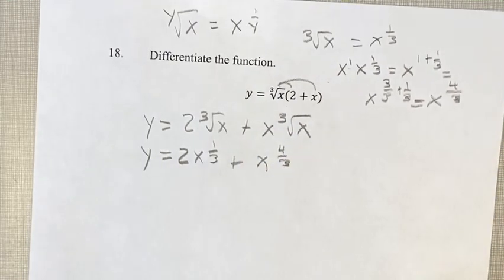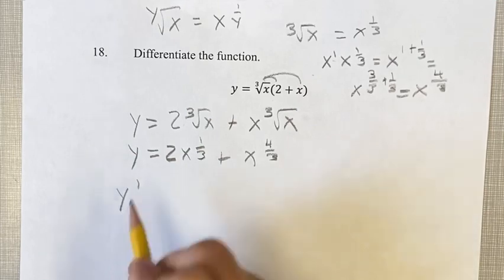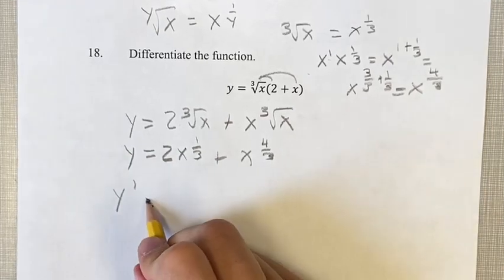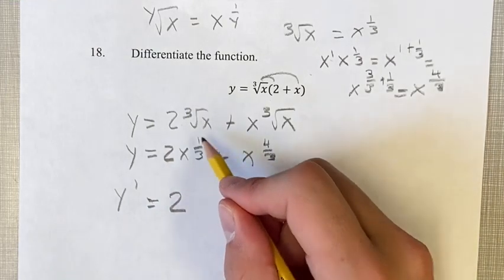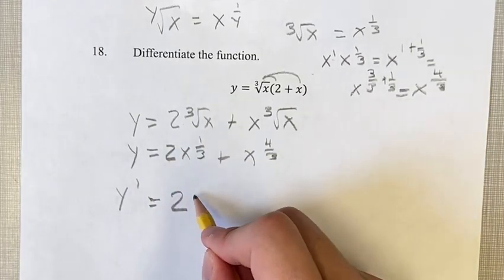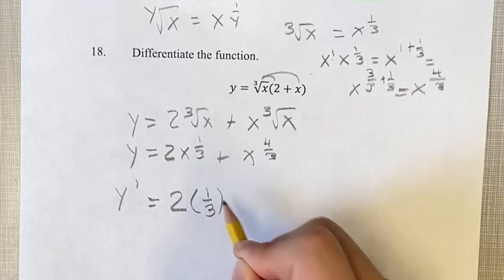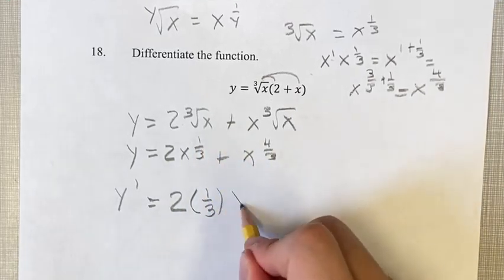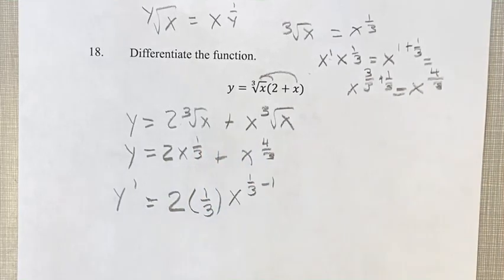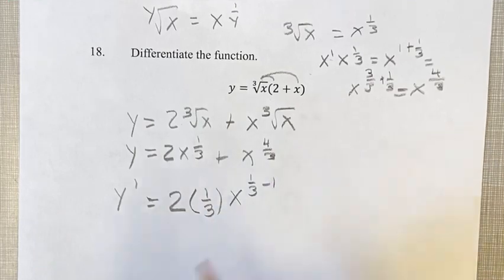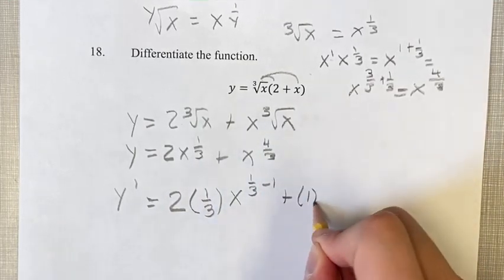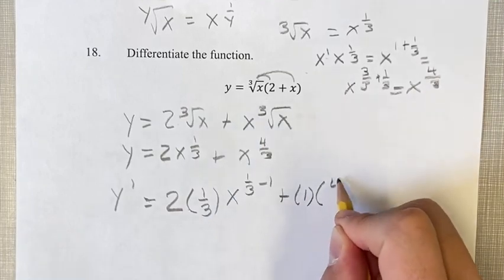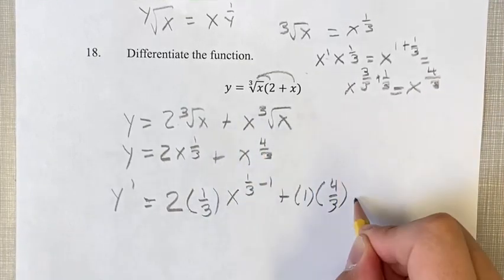Now we can see how this is two power functions. So y prime, our derivative, is going to be 2. You don't mess with the coefficient, except to multiply it by our old exponent, and then subtract 1 from the new exponent. Bring the exponent down, subtract it by 1, plus. Coefficient is basically just 1. Bring the exponent down, subtract it by 1.